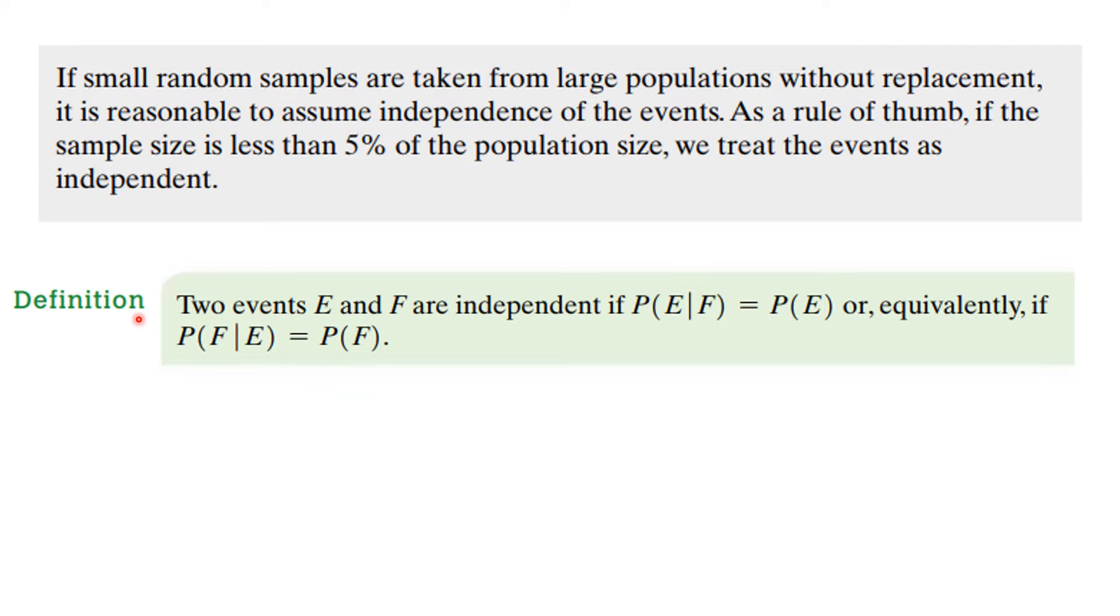If you coordinate the two definitions that we've had, you reach this. The two events, events E and F, are independent if the probability of E given F is equal to the probability of E, or equivalently if the probability of F given E is the probability of F. Whether E happens or it doesn't happen, it has nothing to do with the probability. They're independent.